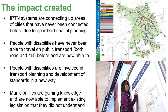Impact: urban areas of cities divided by apartheid spatial planning are being connected. People with disabilities are able to travel with everyone else for the first time. People with disabilities are helping to develop universal design standards for public transport. Municipalities are gaining knowledge on universal design.